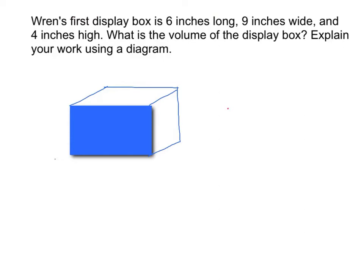The first thing we need to know is what is the formula for volume. The formula for volume is length times width times height. So let's go back to the question. It says the display box is 6 inches long, so we need to label our box 6 inches for our length. This piece right here is our length, so we're going to write down 6 inches.